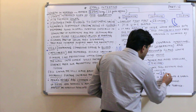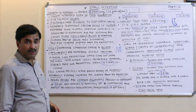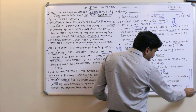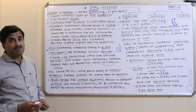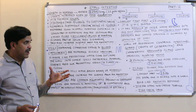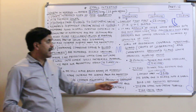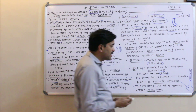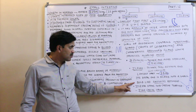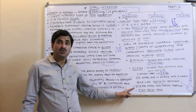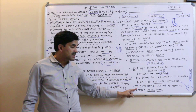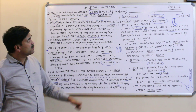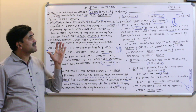The ileum is the longest part of the small intestine at 3.5 meters long. The distal part of the ileum gets dilated and a bulb-like structure is formed called the sacculus rotundus. Ultimately, the ileum opens into the first part of the large intestine known as the cecum through a valve called the ileocecal valve.